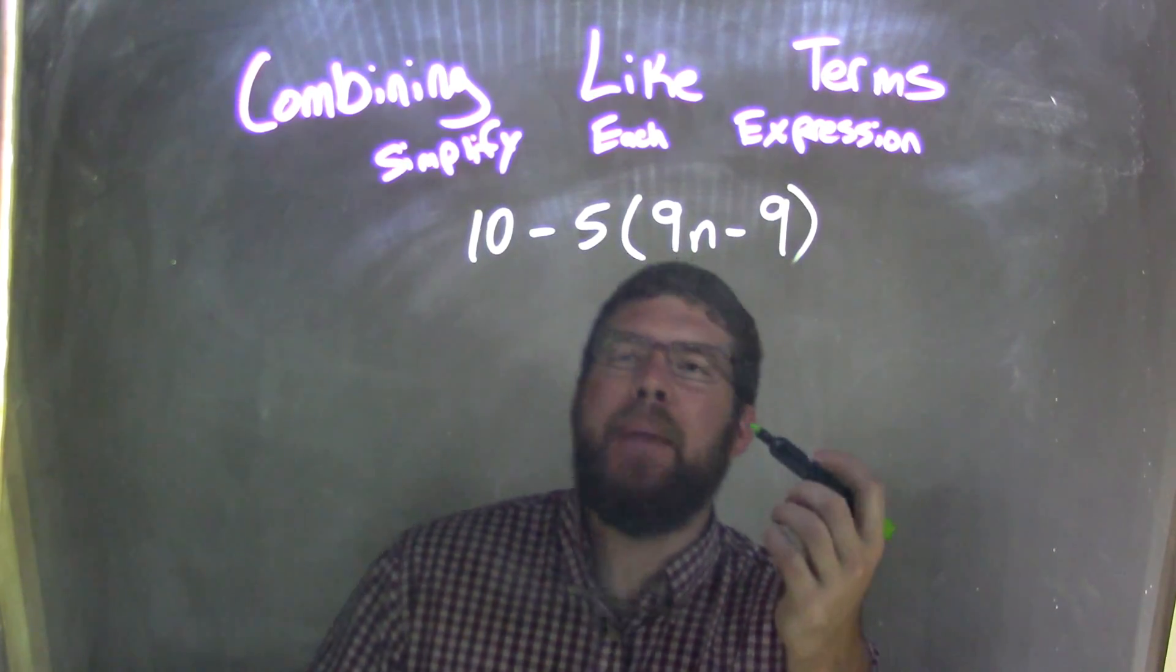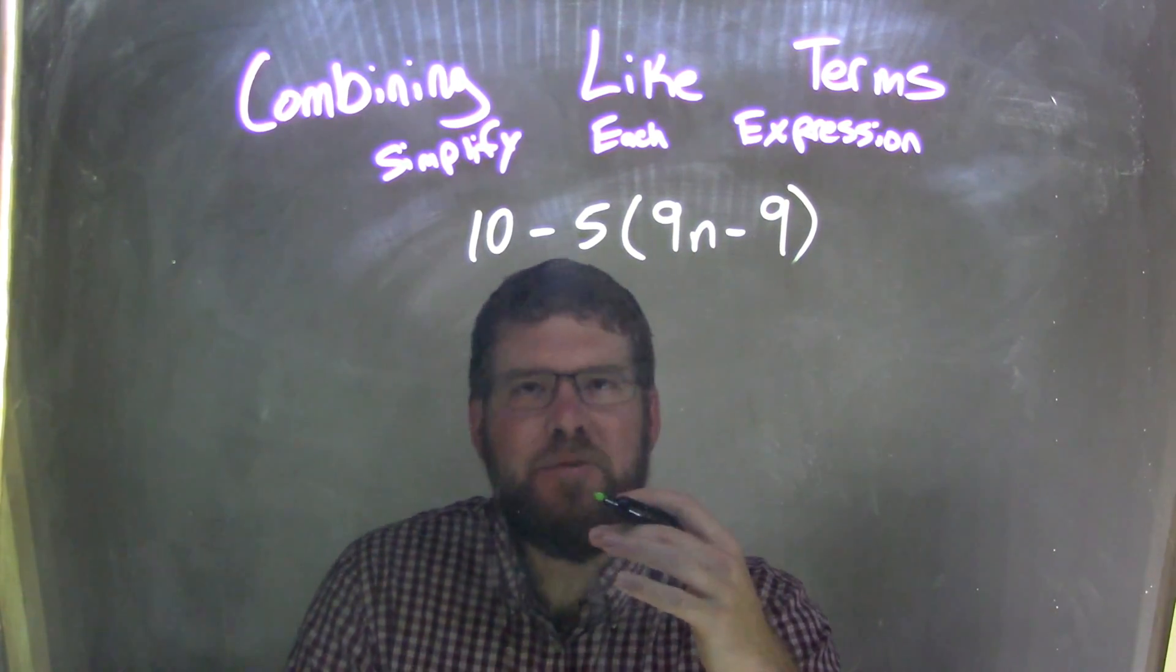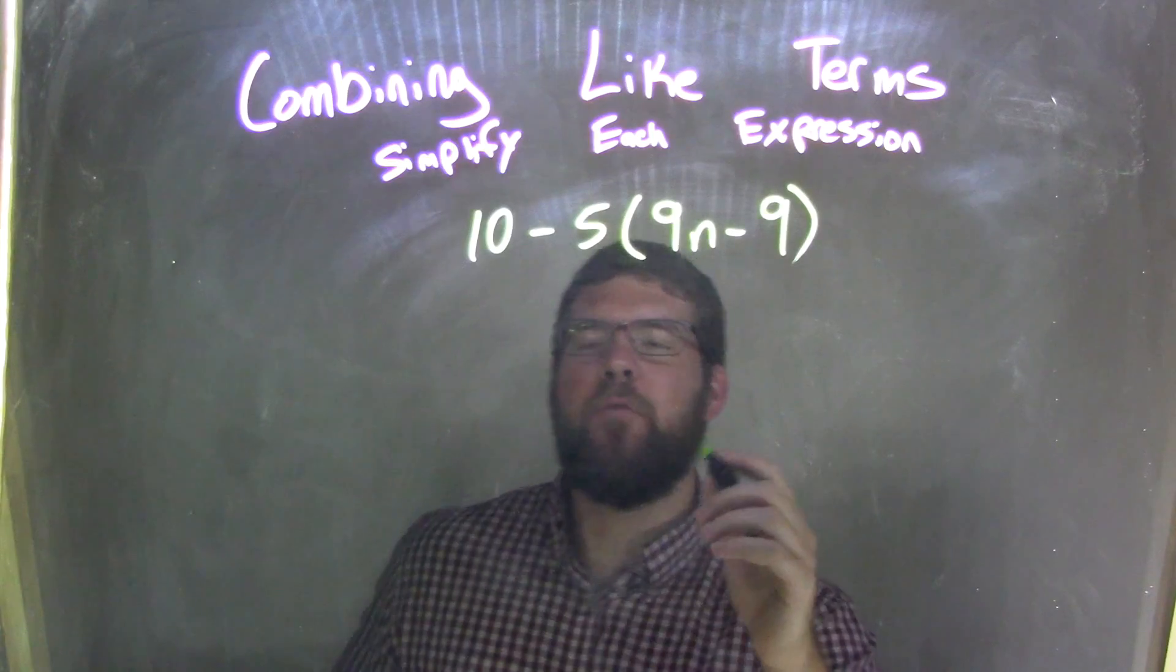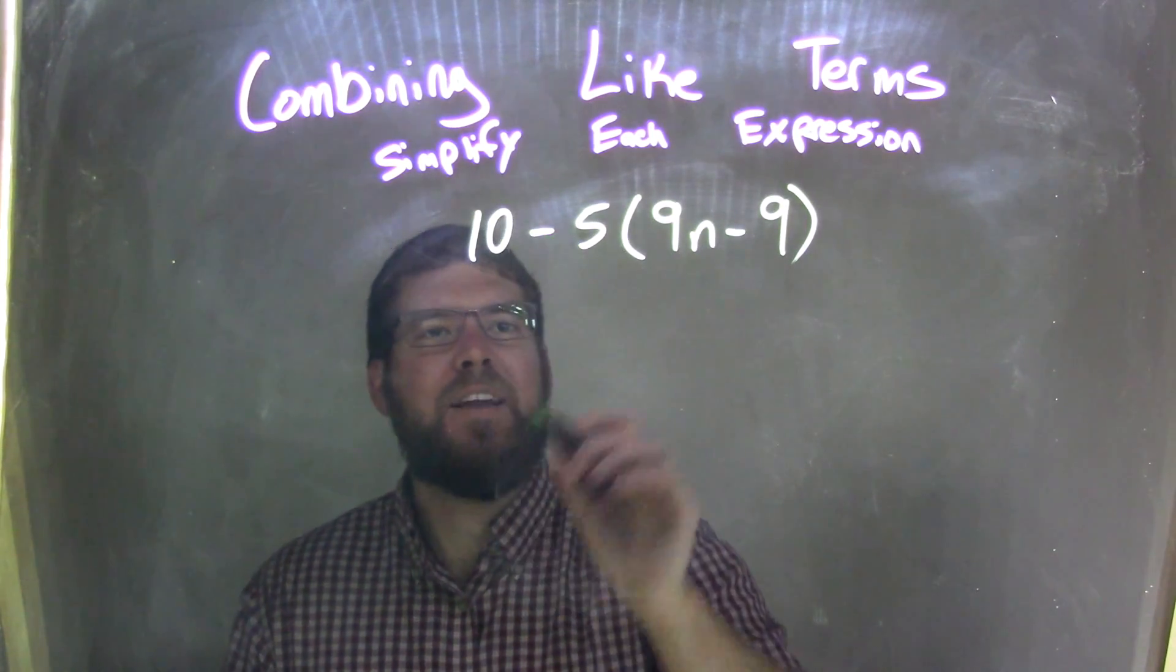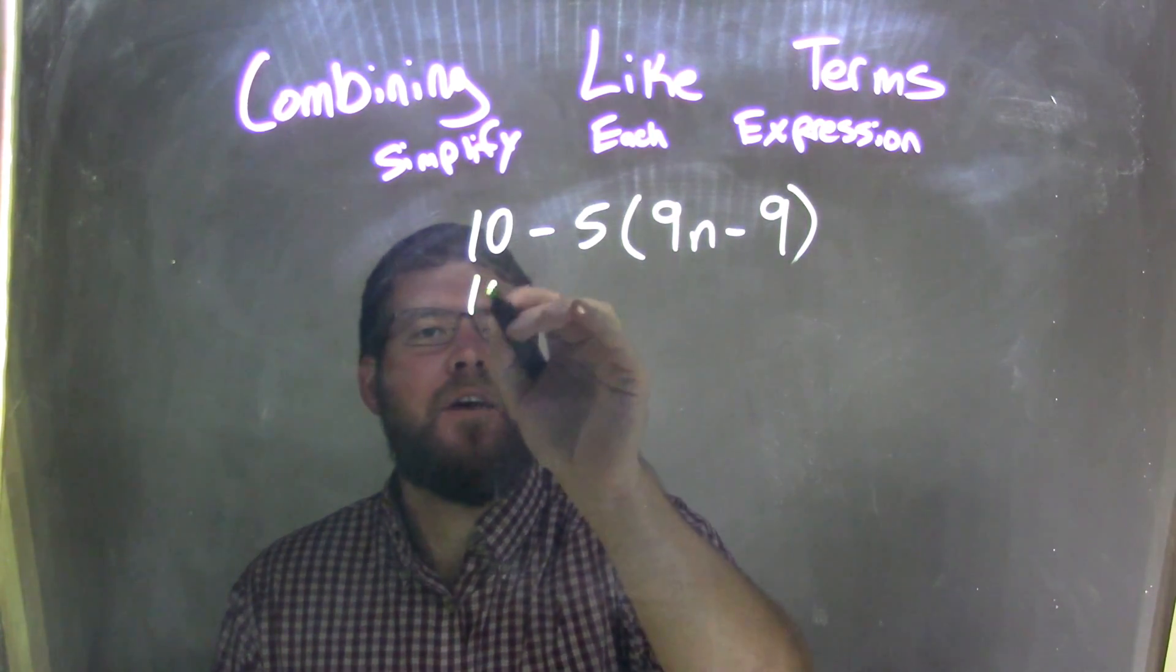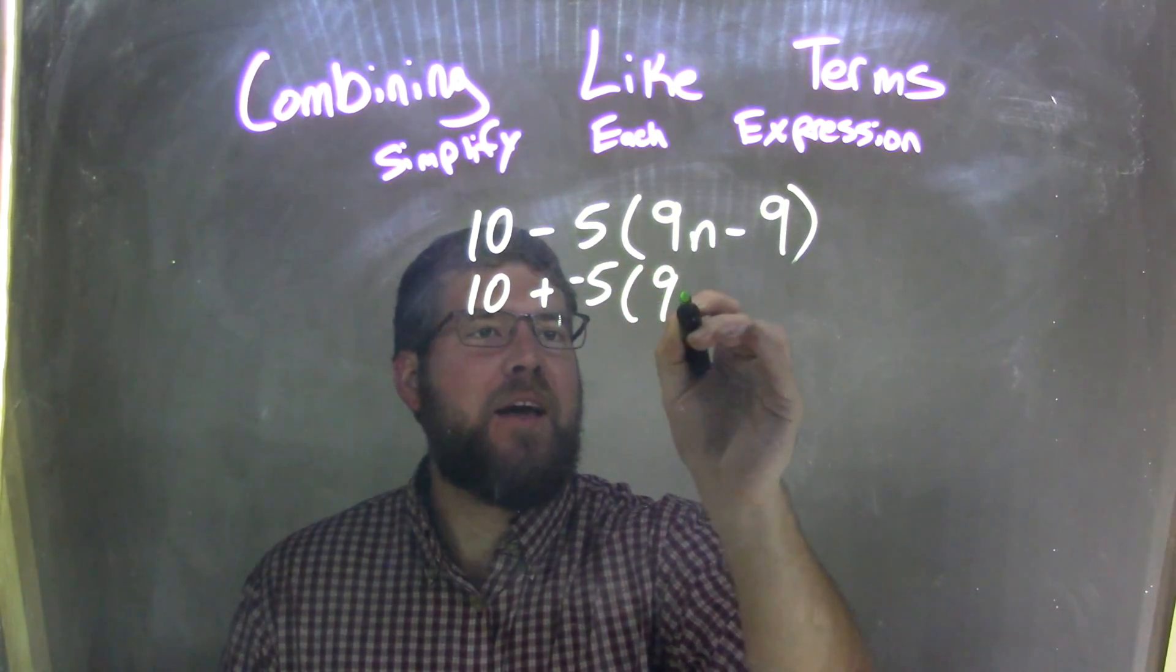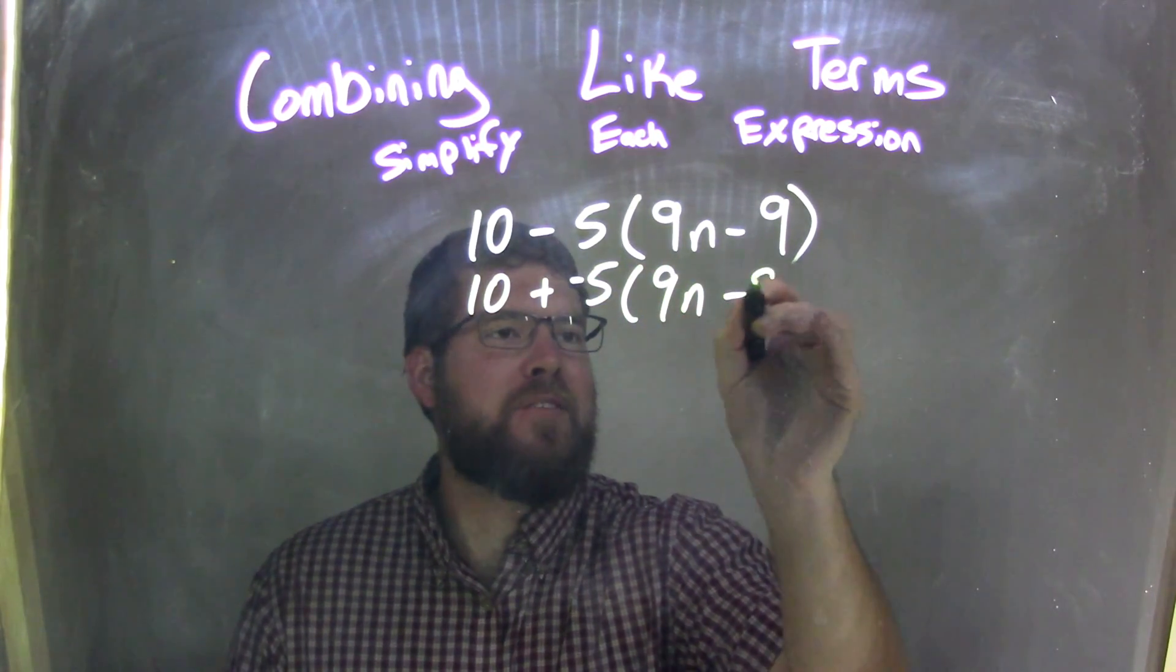So now I have that minus 5, and this is what I like to do. I like to know my first step here is actually make that minus 5 be plus a negative, so plus a negative 5 times 9n minus 9.